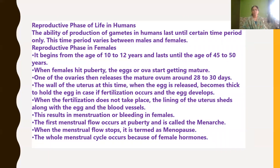Reproduction does not take place throughout our entire life — the ability to produce gametes in humans happens only up to a certain time period. The reproductive phase in females begins from the age of 10 to 12 years and lasts until the age of 45 to 50 years. When females attain puberty, the ovaries start releasing a mature egg once every 28 to 30 days.